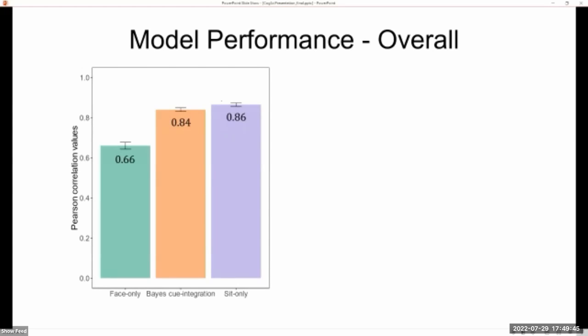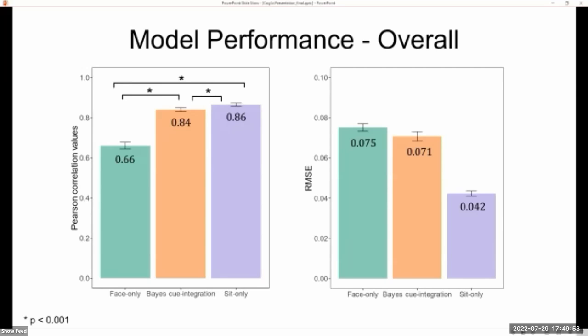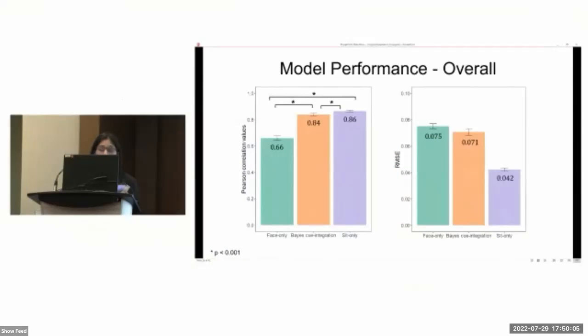We perform pairwise comparisons for these three models, and we find that there are significant differences amongst the correlation values of all of these models. And these results also corroborate with the root mean squared error estimates that we compute. So these are error estimates, which basically mean that lower values signify better fit. So we see that the situation-only model had the lowest RMSE value, followed by the Bayes cue-integration model and the face-only model.